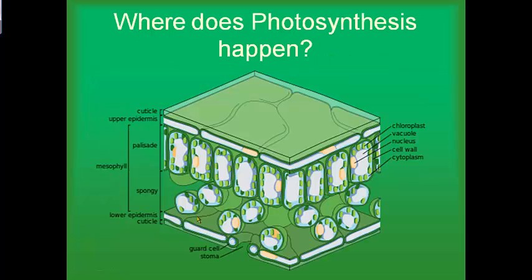So where in the plant does photosynthesis happen? Photosynthesis happens in the leaves of a plant. This is a cross section of a leaf. Up here is the top of the leaf — basically the skin of the leaf called the epidermis. Underneath that skin we have cells called palisade cells, and palisade cells are actually where photosynthesis happens. Inside each palisade cell we have chloroplasts, and they contain chlorophyll.